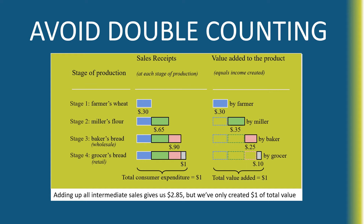If we add all of these values up — the 30 cents, the 65 cents, the 90 cents, and the dollar — we could think that we had sales of $2.85. So 30 plus 65 plus 90 plus one dollar, we end up with $2.85. This is not what we want to count towards GDP.